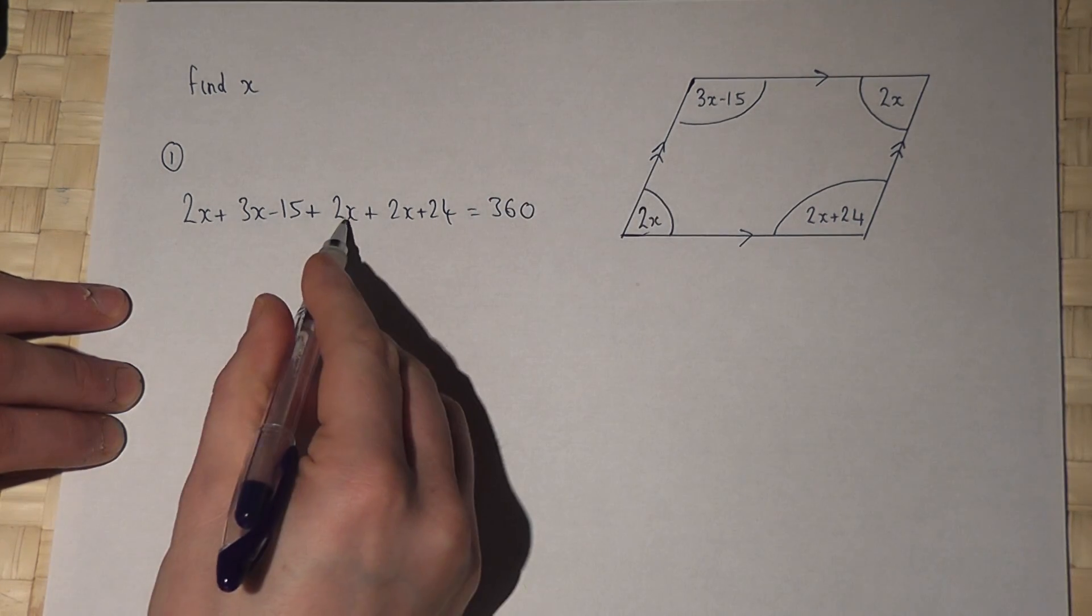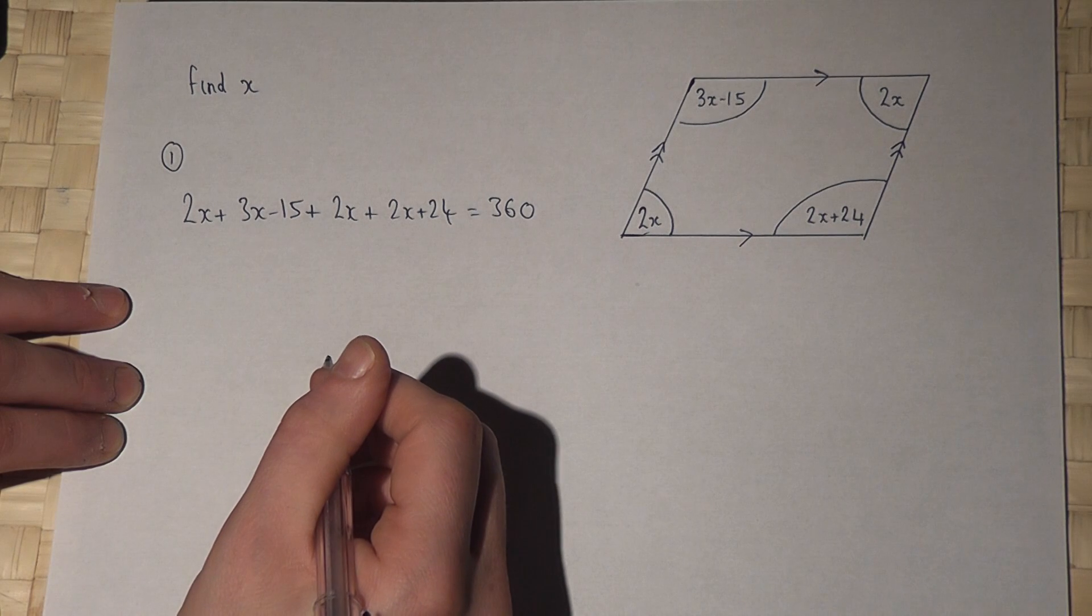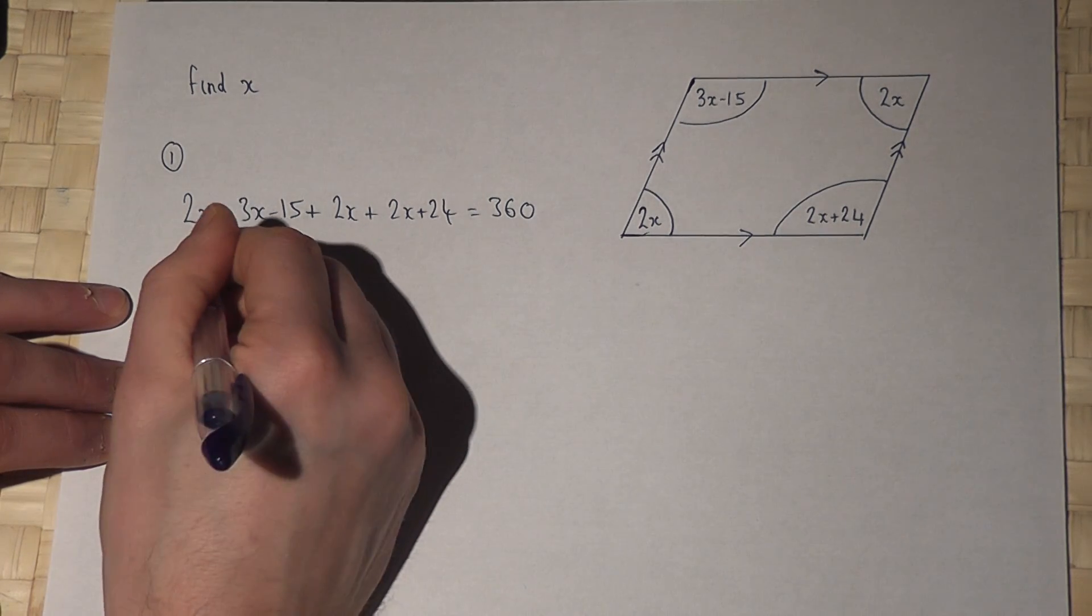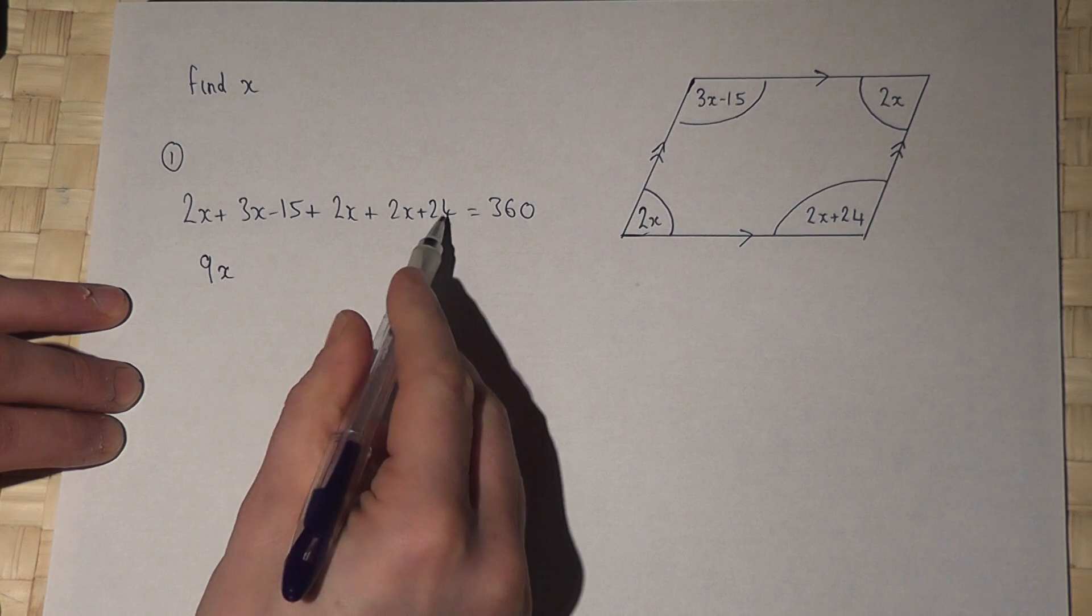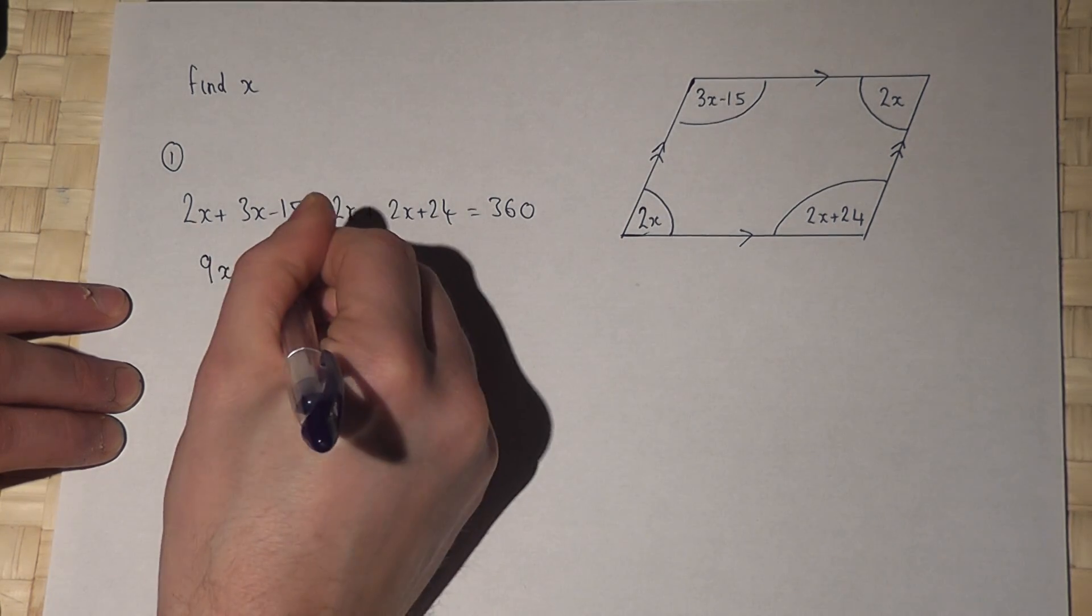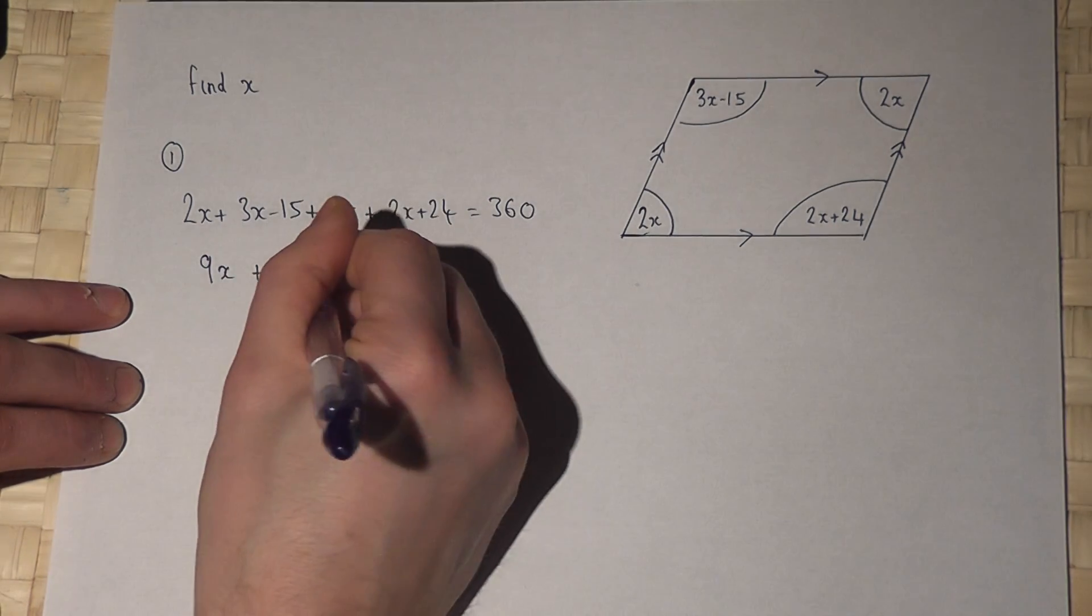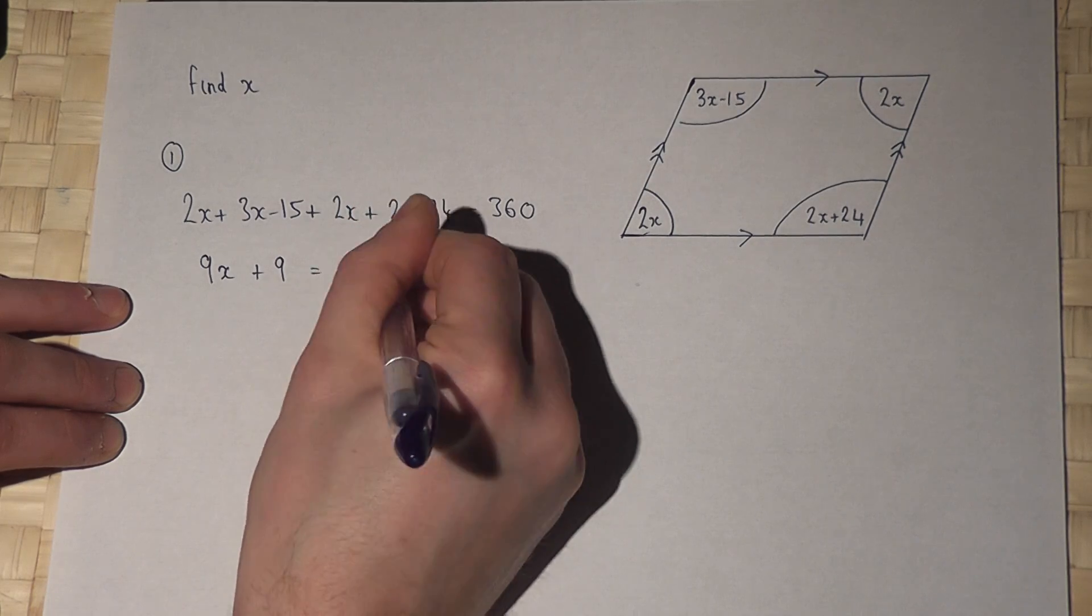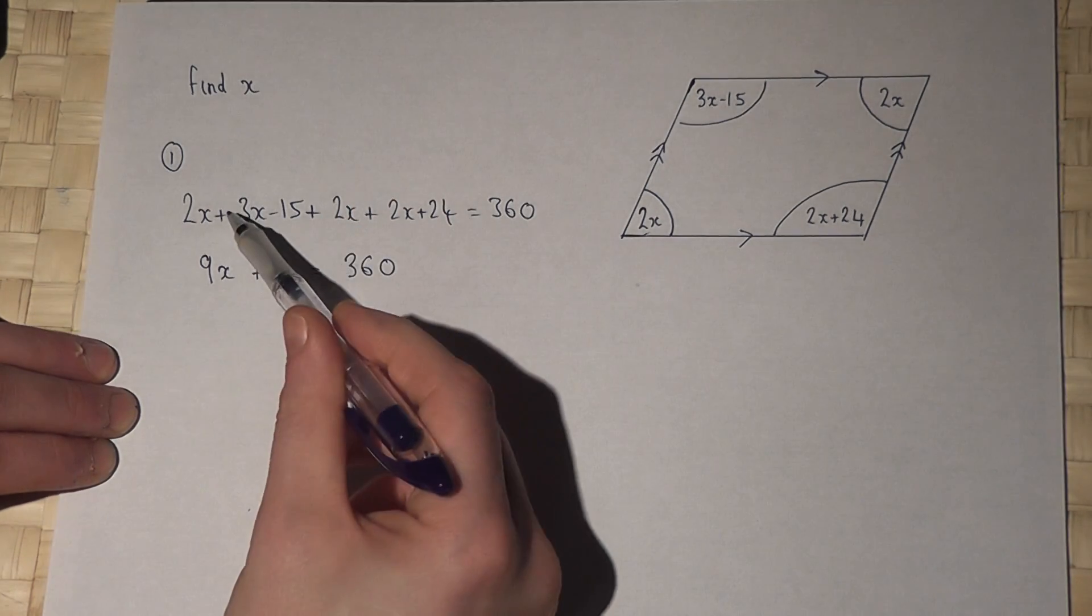Counting the x terms, that's 2, 3, 4, 5, 6, 7, 8, 9. So 9x, and take 15 plus 24 is plus 9. That must equal 360. So I've simplified the equation.